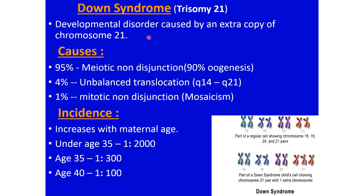Now we discuss the very important Down syndrome. The embryological definition is that it is a developmental disorder caused by an extra copy of chromosome 21. The cause most commonly occurs during meiosis one — meiotic non-disjunction — where two members of a pair move to one pole and the other pole does not receive that chromosome. One cell will contain 24 chromosomes and the other 22. When the gamete containing 24 chromosomes is fertilized with a normal gamete containing 23, the result is a zygote with 47 chromosomes.